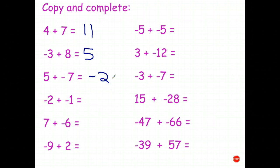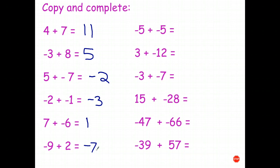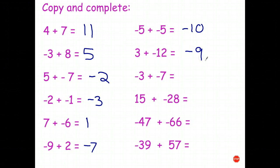Negative two plus negative one: two bills of two and one dollar, so altogether I owe three dollars. Seven plus negative six: seven dollars and a bill for six, after paying the bill I have one dollar. Negative nine plus two: I owe nine dollars, pay off two, leaving a bill for seven — negative seven. Negative five plus negative five: combining two bills of five dollars gives a total debt of ten — negative ten. Negative twelve plus three: paying three dollars off a twelve dollar debt leaves nine dollars still owed — negative nine. Negative three plus negative seven: two bills totaling ten dollars, so I owe ten — negative ten.